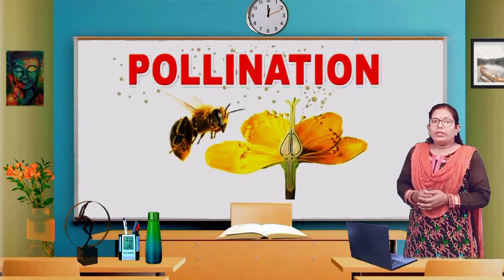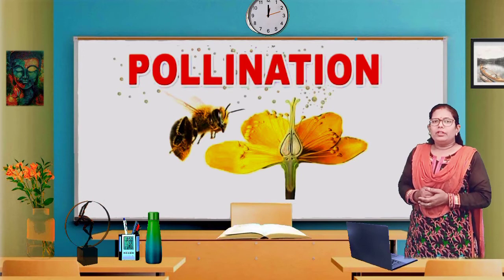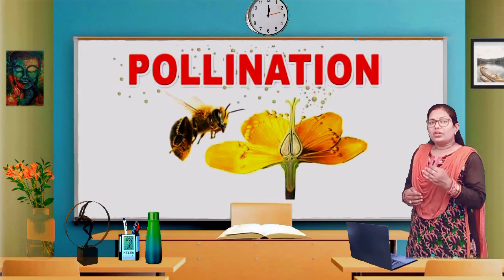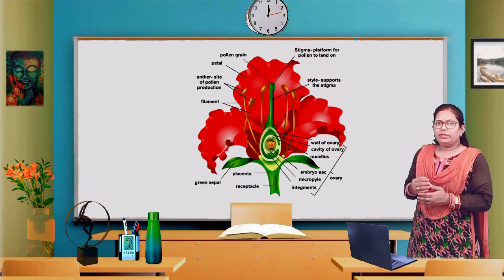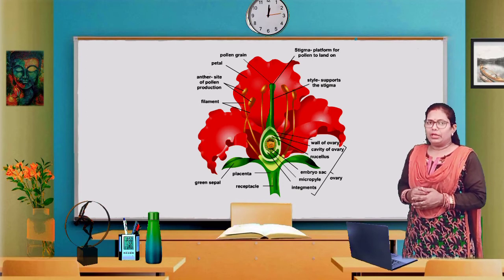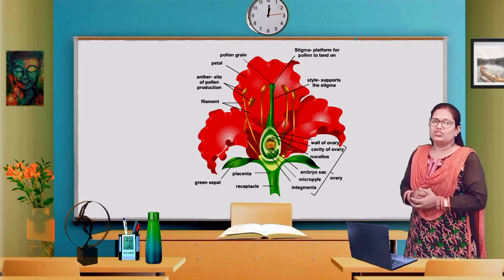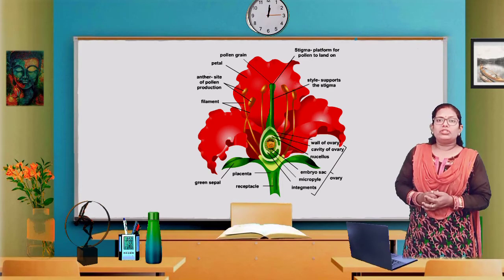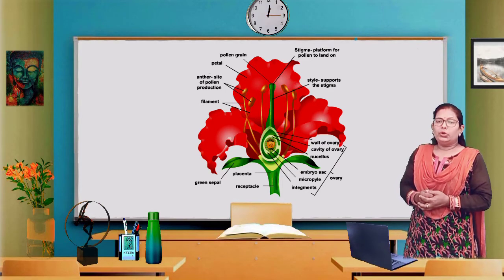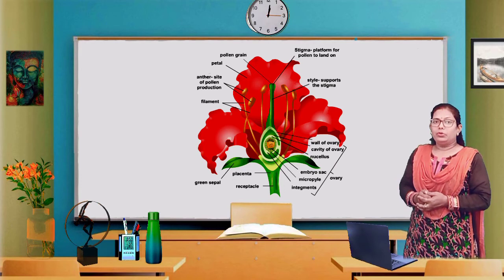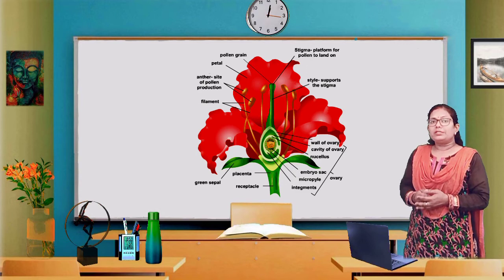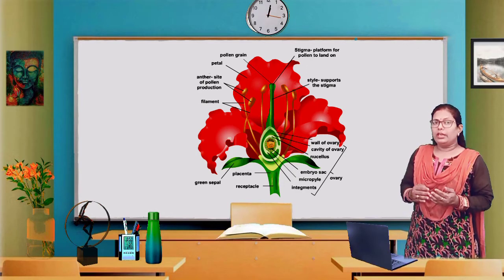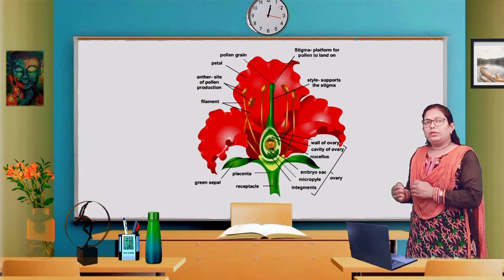Let's start with pollination, but before discussing pollination, we will study about the structure of the flower. As we have studied about the structure of flowers in the last class, flowers have male reproductive parts and female reproductive parts.